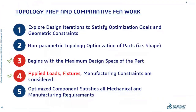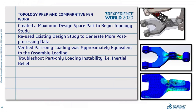The previous discussion was all about obtaining the correct loads and fixtures to apply to the lower A-arm part, because those loads are actually transferred through an assembly — call it prep work for my topology study. To wrap up this section: we created a maximum design space part; had multiple revisits to the original design study gathering data for use in the topology study; used a comparative FEA process for verifying that the part-only FEA matched the full assembly FEA; and then troubleshot some instability in the part-only finite element model.